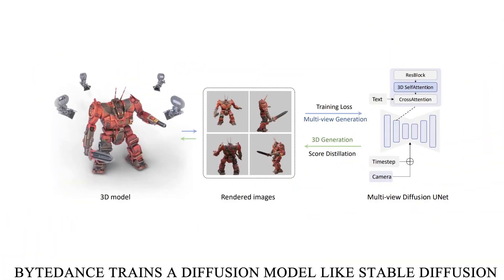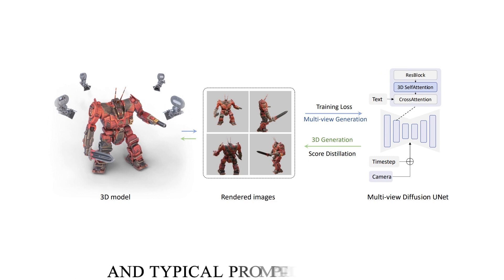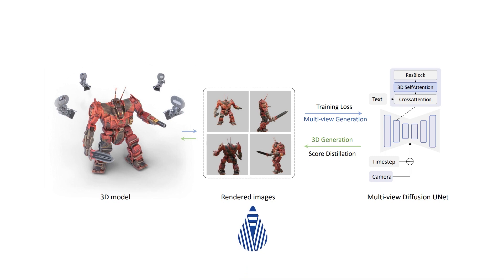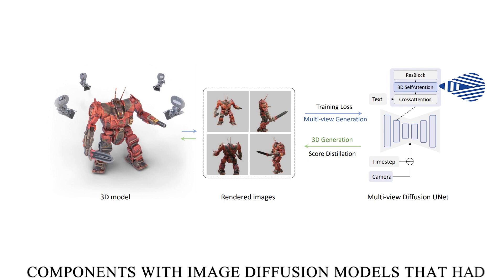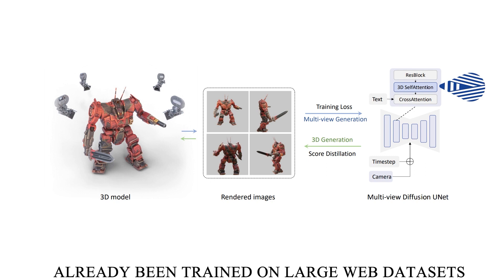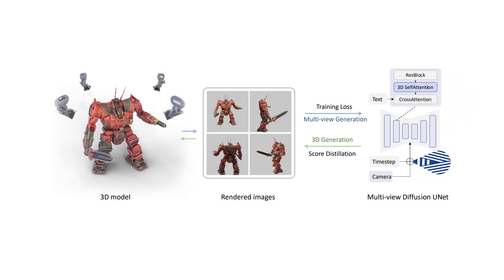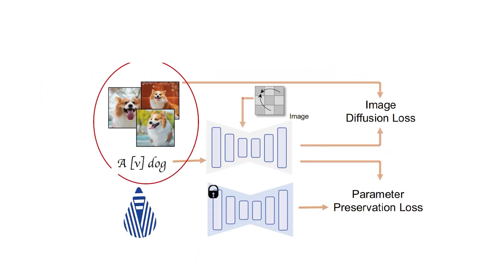ByteDance trains a diffusion model, like Stable Diffusion, to address this issue using numerous views of 3D objects and typical prompt-image pairs. The researchers produce a sizable array of 3D models from various viewpoints and camera angles. This was made feasible by combining a multi-view dataset created from 3D components with image diffusion models that had already been trained on large web datasets. The adaptability of 2D diffusion models and the coherence of 3D data are combined to create the final multi-view diffusion model. It serves as an important multi-view reference for 3D material using score distillation sampling, considerably enhancing the stability of current 2D lifting techniques by addressing 3D consistency. The multi-view diffusion model can also be customized with just a few input samples, making it appropriate for customized 3D generation, such as in the Dreambooth 3D application, while still maintaining consistency in learning the subject's identification.